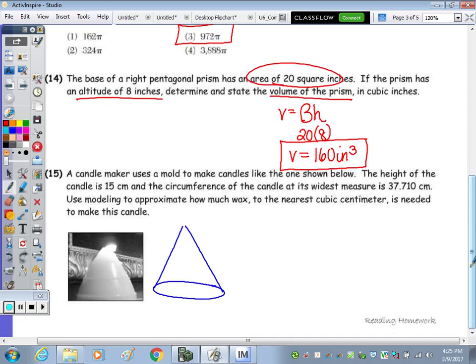In 15, a candle maker uses a mold to make candles like the one shown below. The height of the candle is 15, so I'm going to note that. And the circumference of the candle at its widest measure is 37.710 centimeters. Use modeling to approximate how much wax to the nearest cubic centimeter is needed. How much wax to the nearest cubic centimeter is volume.